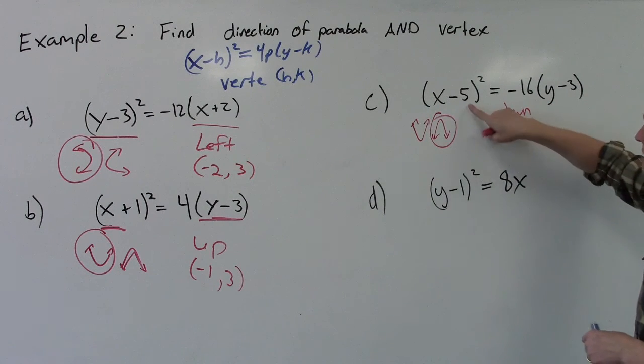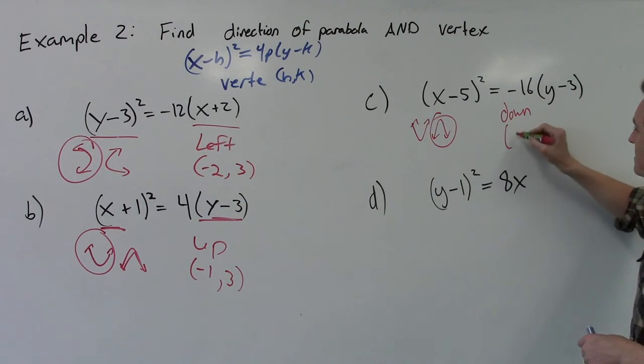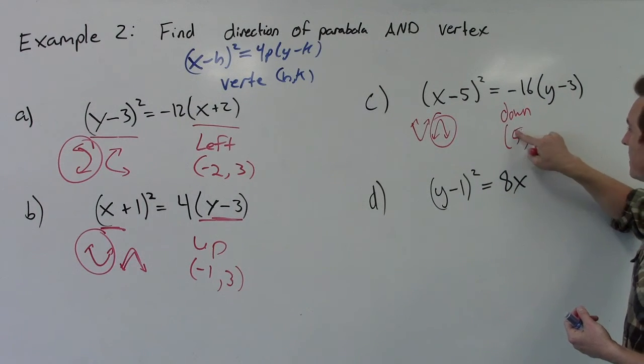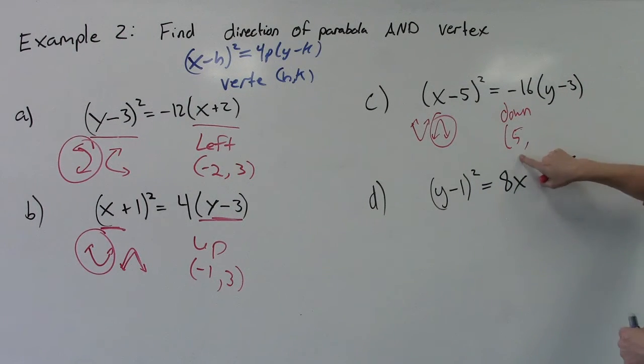Then we got to find the vertex. So opposite of the x, opposite of the number inside with x is a positive 5. Right, there's a negative 5 in there, a minus 5. We want a positive 5 here. And then since this is a y minus 3, we want a positive 3 here. So there's our vertex.